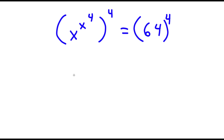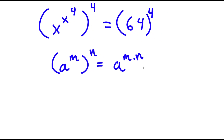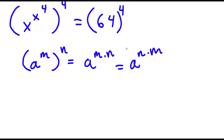Now if I have something in the form a to the power of m to the power of n, this is the same thing as a to the power of m times n. And m times n are interchangeable, meaning this is the same as a to the power of n times m. So I can rewrite a to the power of m to the power of n as a to the power of n to the power of m.